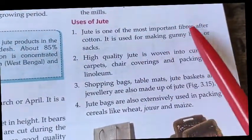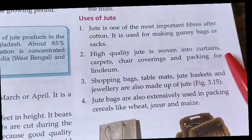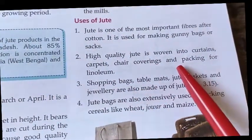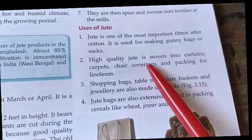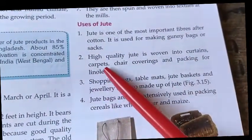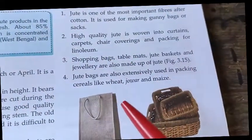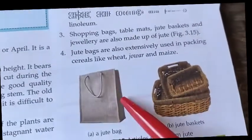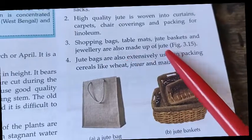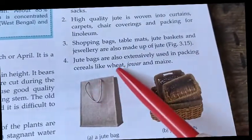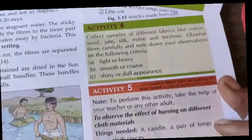Jute is one of the most important fibers after cotton. It is used for making gunny bags and sacks for storing cereals. High quality jute is woven into curtains, carpets, chair coverings, and packing for linoleum. Jute is also widely used for shopping bags, table mats, baskets, and jewelry. Jute bags are extensively used for packing crops like wheat, jowar, and maize.